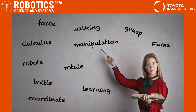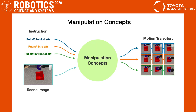Humans use concepts to mentally represent, summarize, and abstract diverse knowledge and skills. In this paper, we want to endow our robots with the ability to acquire manipulation concepts. These manipulation concepts can be seen as mental representations of verbs in a sentence. Given initial scene images, when we send various instructions such as 'put something behind something' or 'put something into something,' we want our robot to generate motion trajectories to accomplish these tasks.